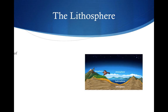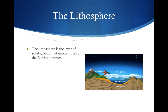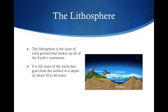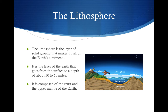The lithosphere is the layer of solid ground that makes up all of the Earth's continents. It is the layer of Earth that goes from the surface to a depth of about 30 to 60 miles. It is composed of crust and the upper mantle of the Earth.